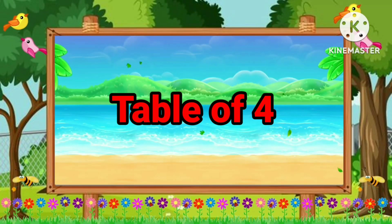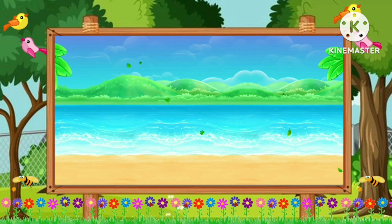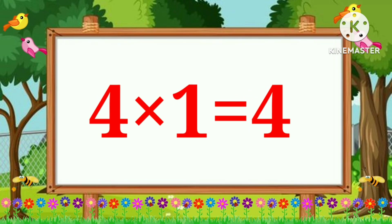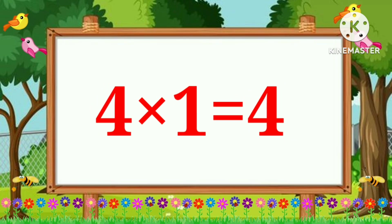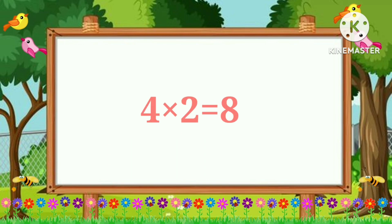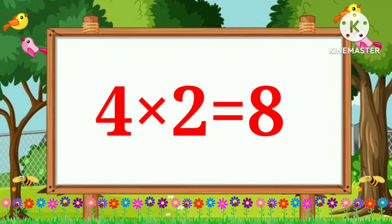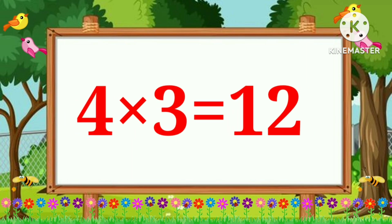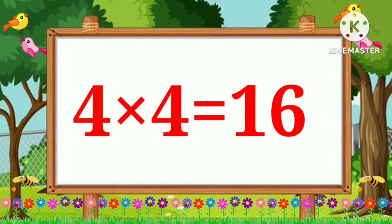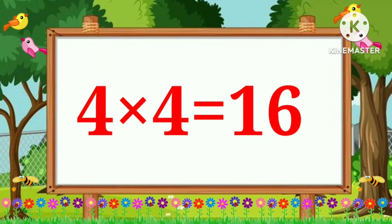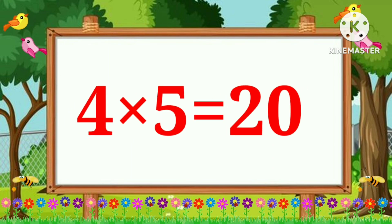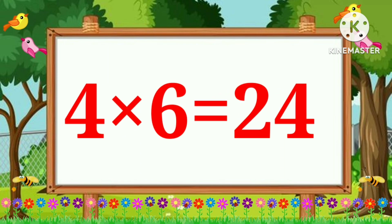Table of 4: 4 ones are 4, 4 twos are 8, 4 threes are 12, 4 fours are 16, 4 fives are 20.